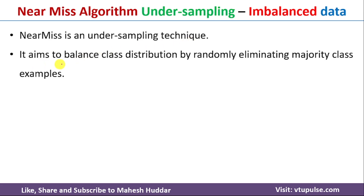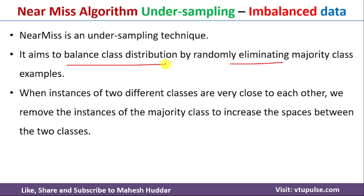The aim of this algorithm is to balance the class distribution by randomly eliminating majority class examples. What we do here is select a few examples from the majority class and eliminate them so that we get a balanced class distribution. We select two examples from two different classes — one from the majority class and one from the minority class — and the majority class example will be deleted.